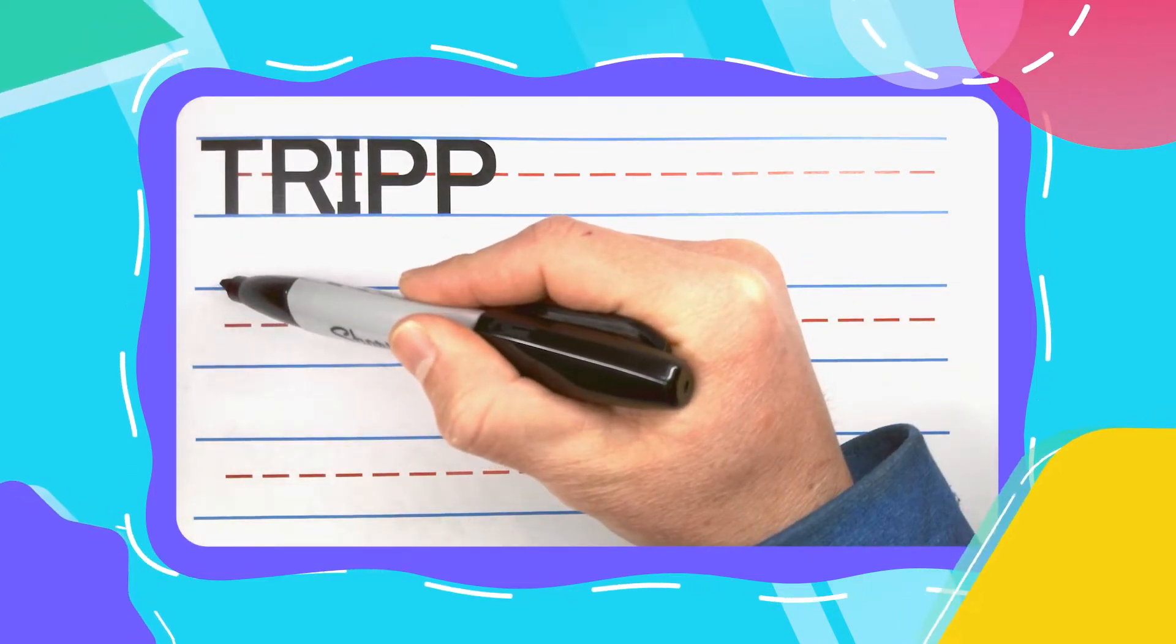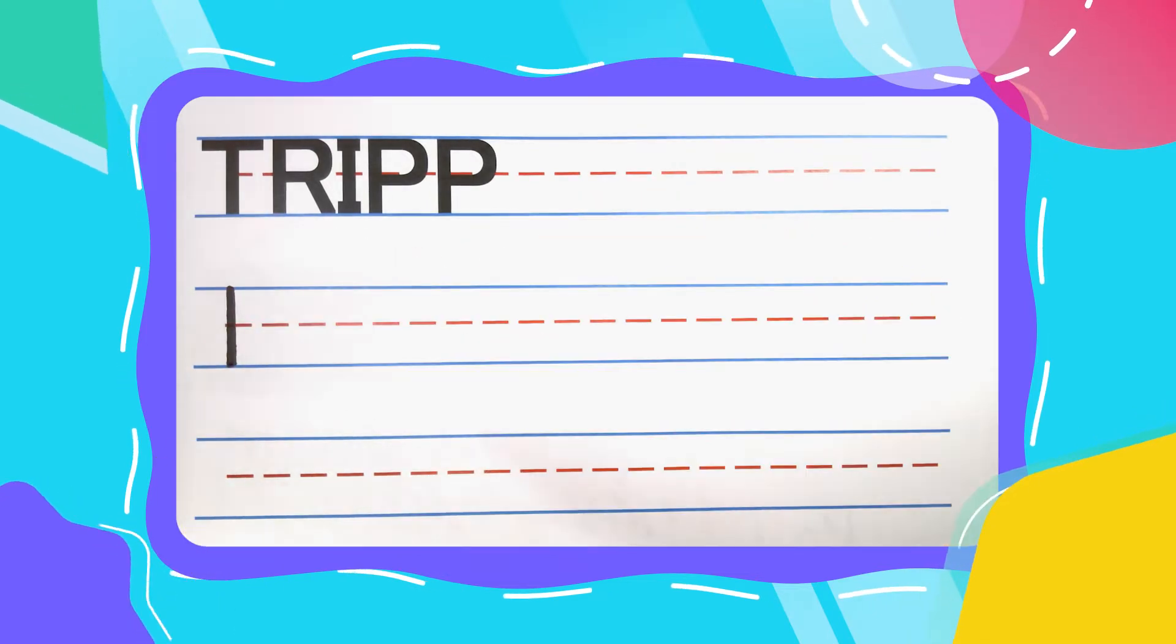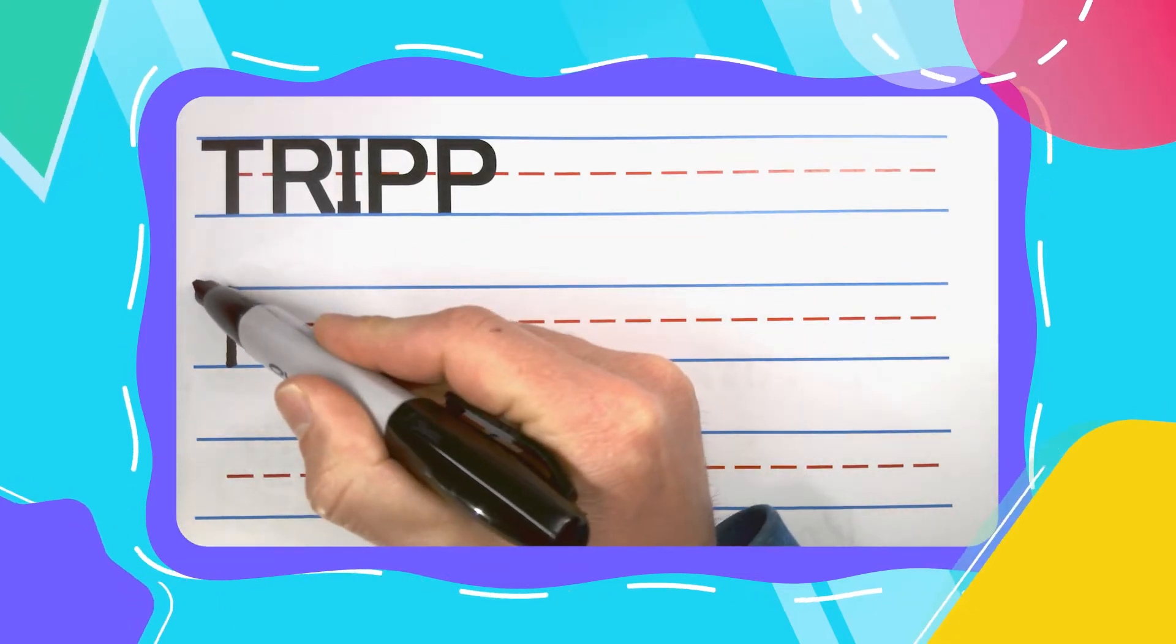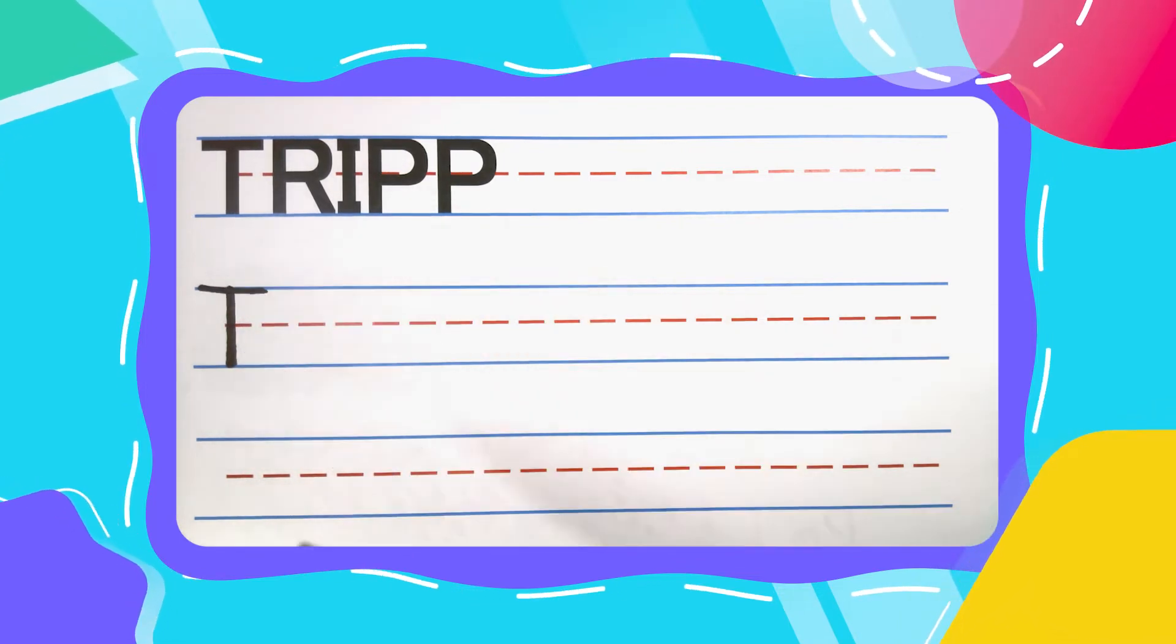Start TRIPP with one of those two tall tunnels. Straight up and down to start. Then come back to the top and give your two tall T a Texas sized hat. And you're done.